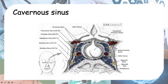also known as levator palpebrae superioris, which is responsible for lifting up your eyelids to keep your eyes open. In cavernous sinus syndrome, if cranial nerve 3 is affected, you will have ptosis — and in this case it is complete ptosis, not partial ptosis.